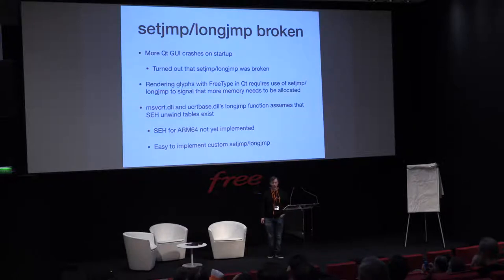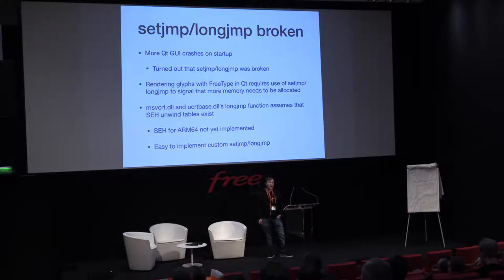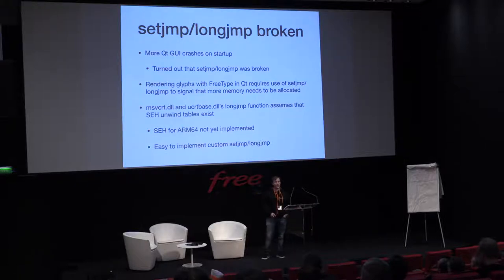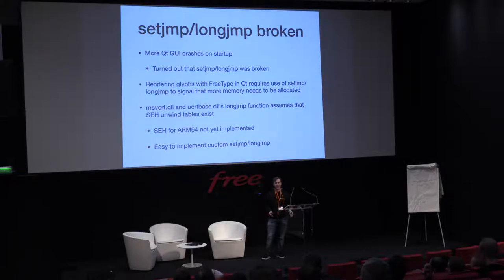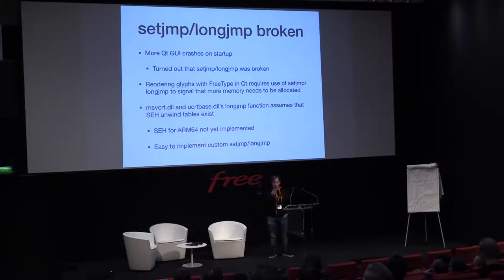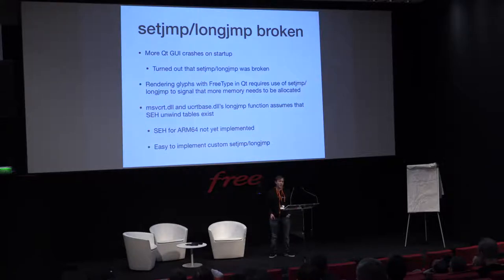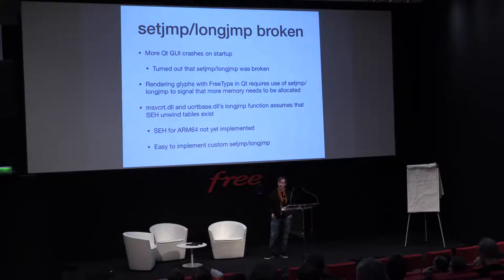Then once I tried to run Qt on the real device — this is apparently fun. When you open the VLC GUI built with Qt, it will at some point use setjmp/longjmp. Qt uses FreeType to render some glyphs, initially allocates a buffer, and when it realizes the buffer is too small, uses setjmp/longjmp to request more memory and try again. This didn't work with the OS version of setjmp/longjmp because they assume you have proper unwind tables, which we don't. So it was fairly straightforward to implement the manual version — just dump all registers into a struct and restore them — but I had to hold that patch until I could explain why I was doing it.